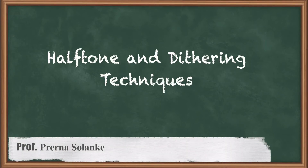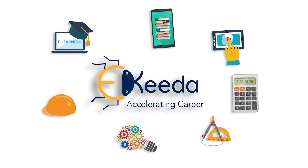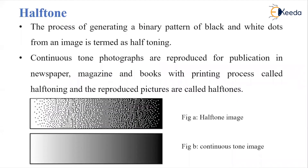Hello students, today we are going to learn about halftone and dithering techniques. Halftone is a process of generating the binary pattern of black and white dots from an image. Halftone is generally used in newspapers, magazines, or books with a printing process. Continuous tone photographs are reproduced for publication in newspapers, magazines, and books with a printing process called halftoning, and the reproduced pictures are called halftones.